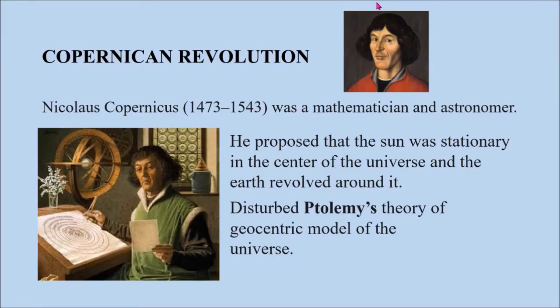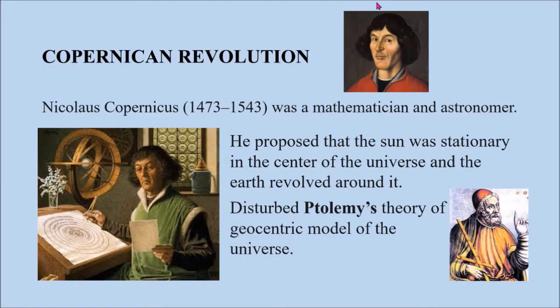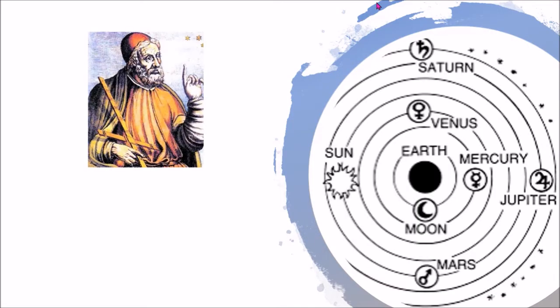This disturbed the Ptolemaic theory of the geocentric model of the universe, wherein he believed that the earth is the center of the universe, which the Catholic Church has supported. This is his model of geocentric theory in which the earth is the center of all the planets such as the moon, Mercury, Venus, Saturn, Jupiter, Mars, and the sun.